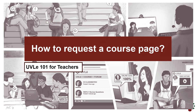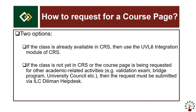How to Request a Course Page. There are two main options to request a course page in Avlib. The first and main option is to use the CRS website. If the class is already available in CRS, use the Avlib integration module of CRS. If the class is not yet in CRS, or the course page is being requested for other academic-related activities like validation exam, bridge program, or university council meeting, then the request must be submitted via ILC Deliman Helpdesk. Just visit the Helpdesk website and open a ticket requesting a course page.